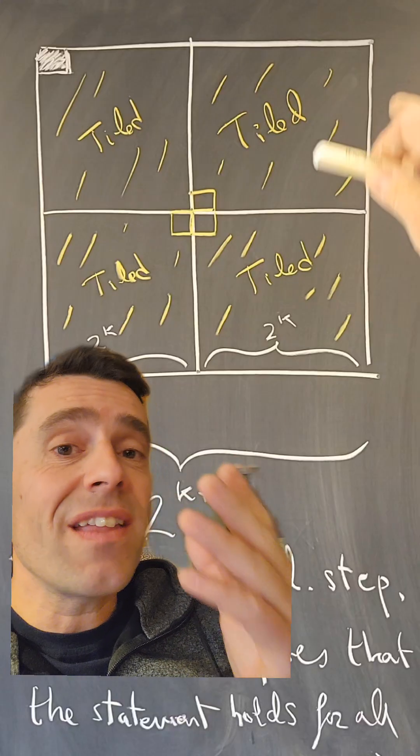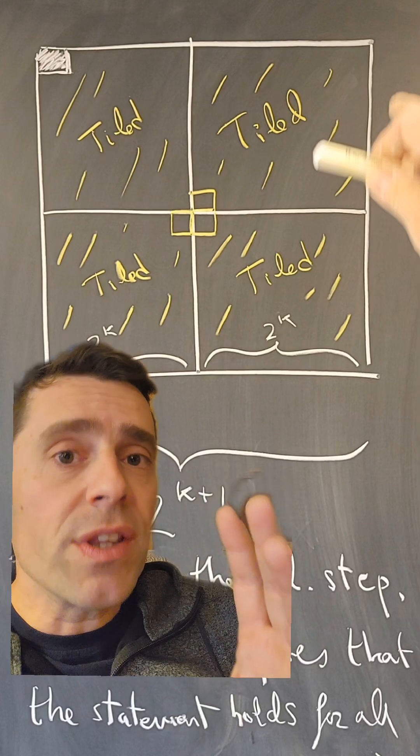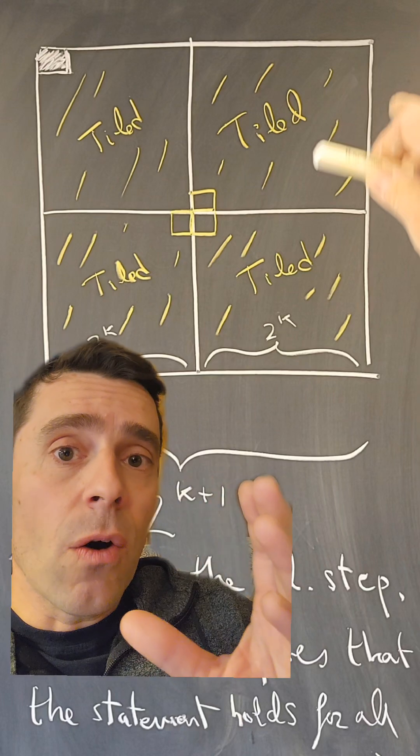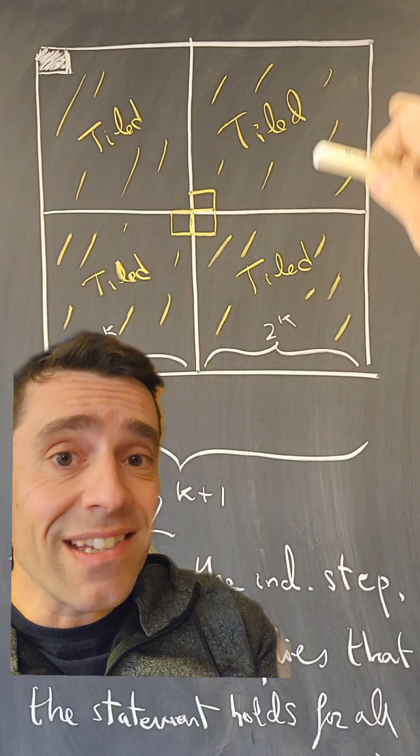But what I said in the comments is that this proof is recursively constructive, which is very different from constructive. Why so?